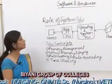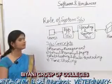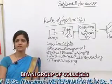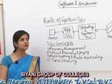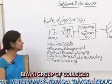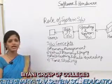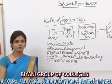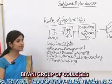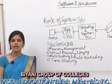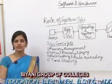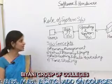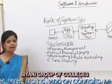The role of system software is to act as an interface and buffer between application software and hardware. It also controls the computer hardware and acts as an interface between computer applications and hardware.